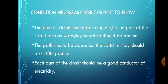There are a few conditions necessary for current to flow. Number one: the electric circuit should be complete — no part such as wires, key, or switch should be broken, otherwise the path will be incomplete and current will stop. Number two: the path should be closed, meaning the switch or key should be in the on position; if in the off position, the path is incomplete and current does not flow. Number three: each part of the circuit should be a good conductor of electricity — materials that allow electricity to pass through them. Materials that do not allow electricity to pass through are called poor conductors or insulators.